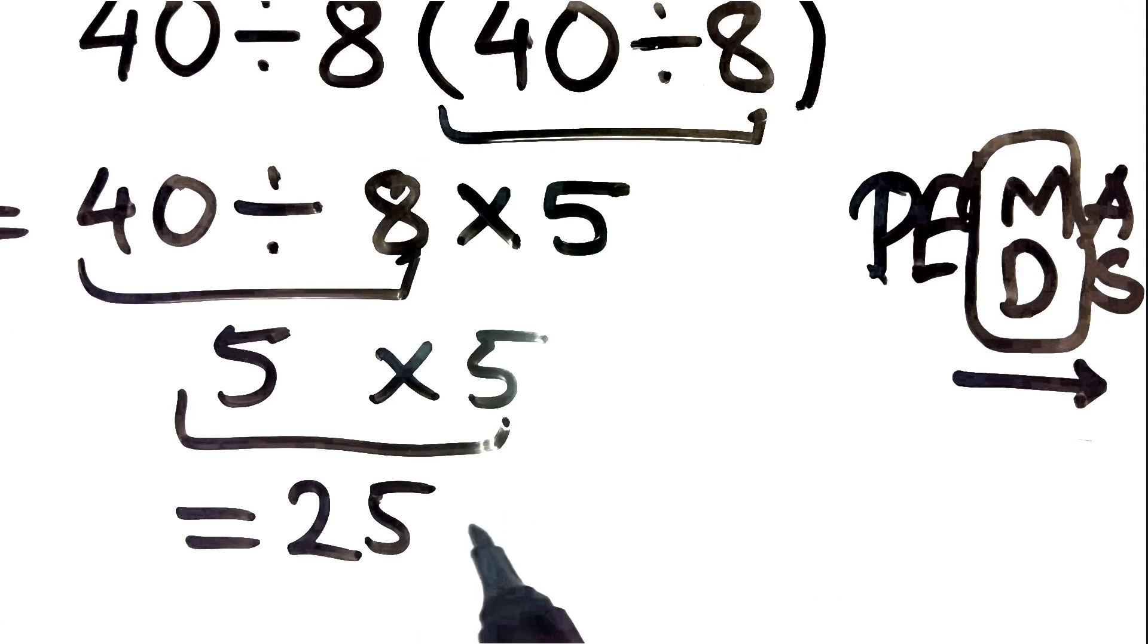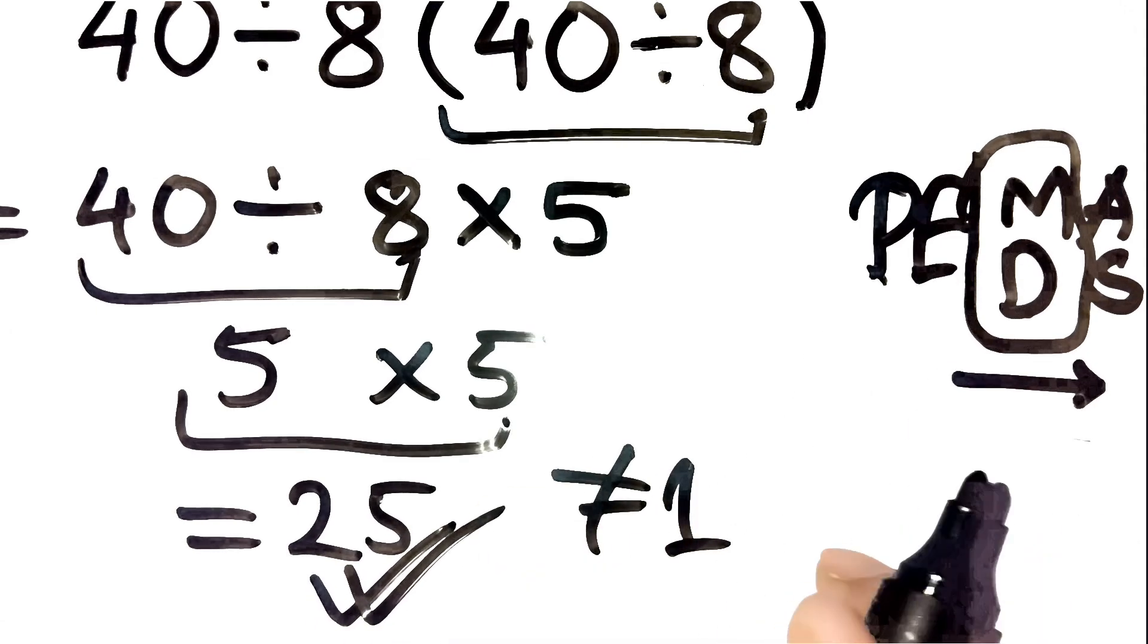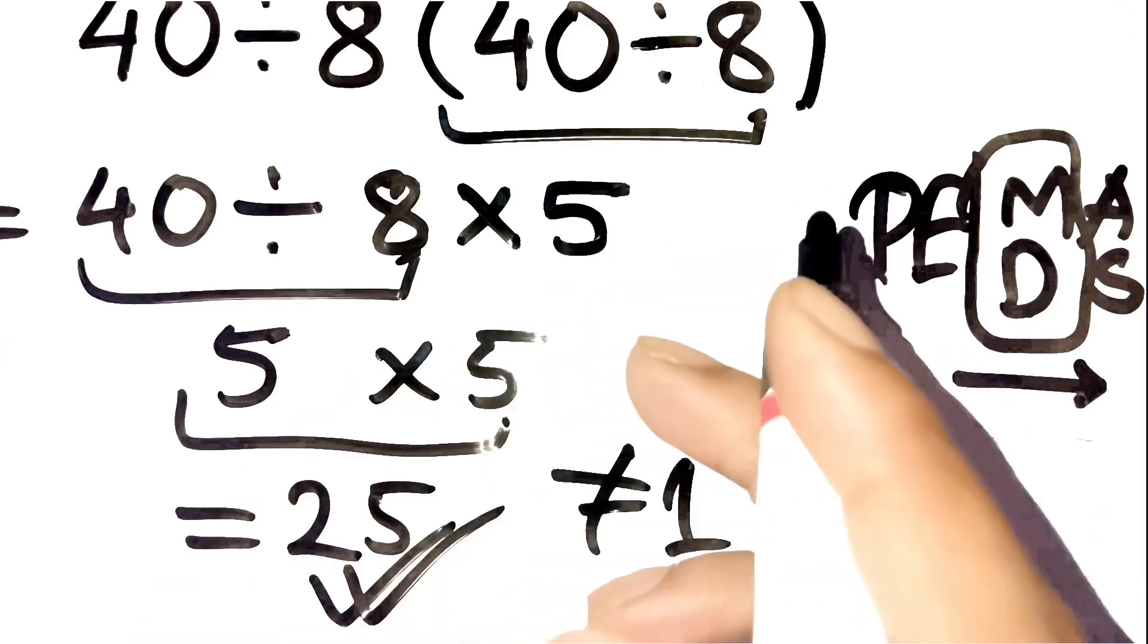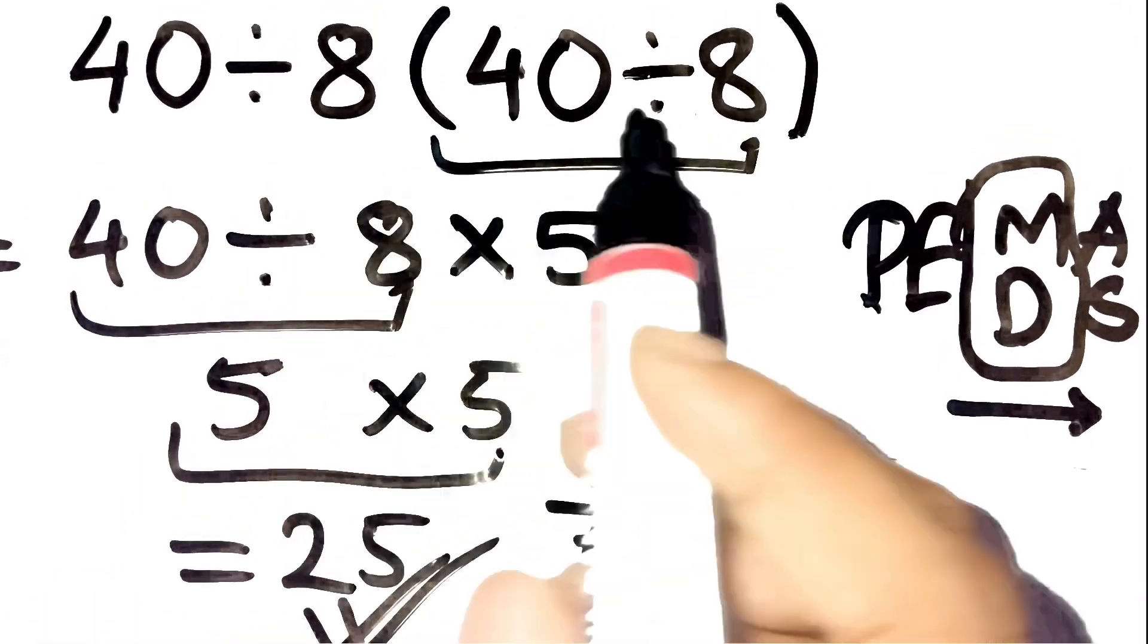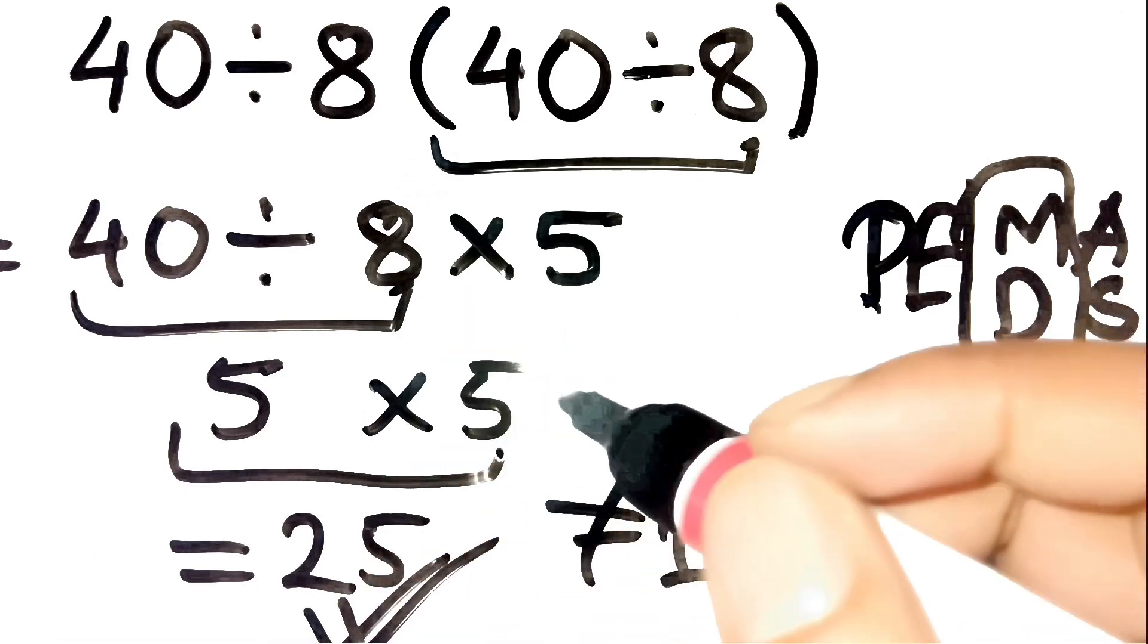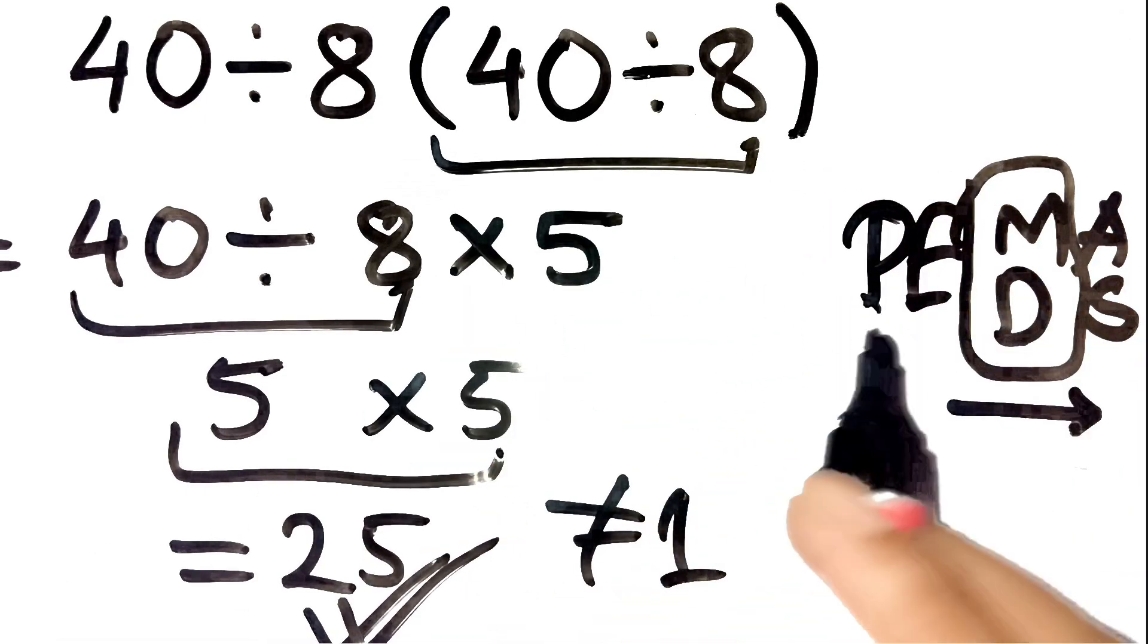So the correct answer is 25, not 1. Crazy, right? That's why these simple math problems fool so many people. If you don't believe it, try it on your calculator. And hey, if you're still scratching your head, write it in the comments. Let's see how many people get it wrong first. Thanks for watching.